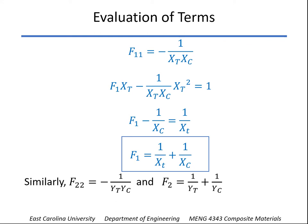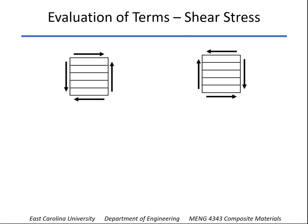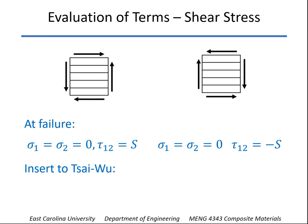Okay, that takes care of a few of the terms. Now let's consider shear. On the left side, we've shown what we would call a positive shear stress, and on the right side will be a negative shear stress. And so at failure, on the left side, tau 1,2 will be the shear strength S. And on the right side, the shear stress at failure will be minus capital S.